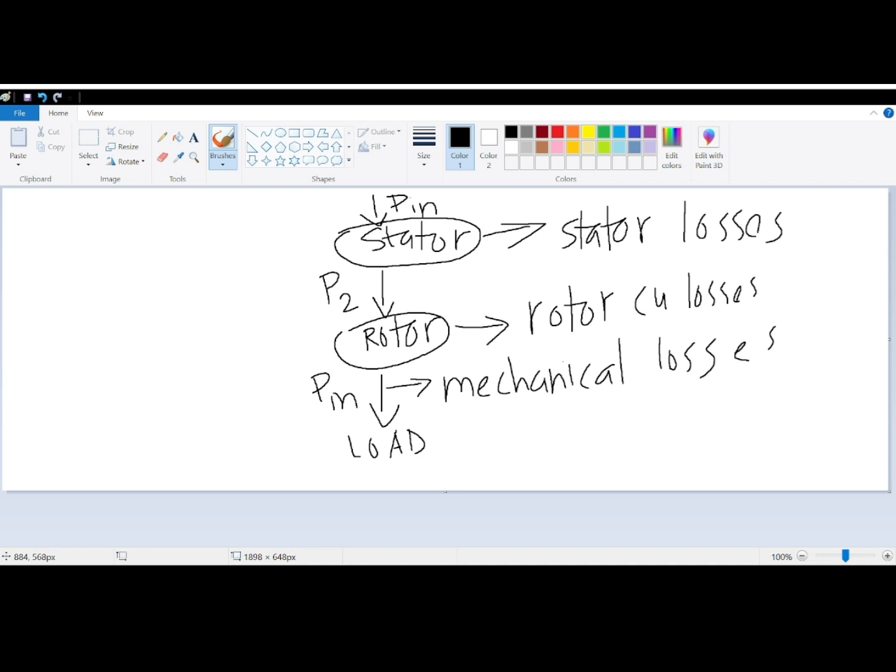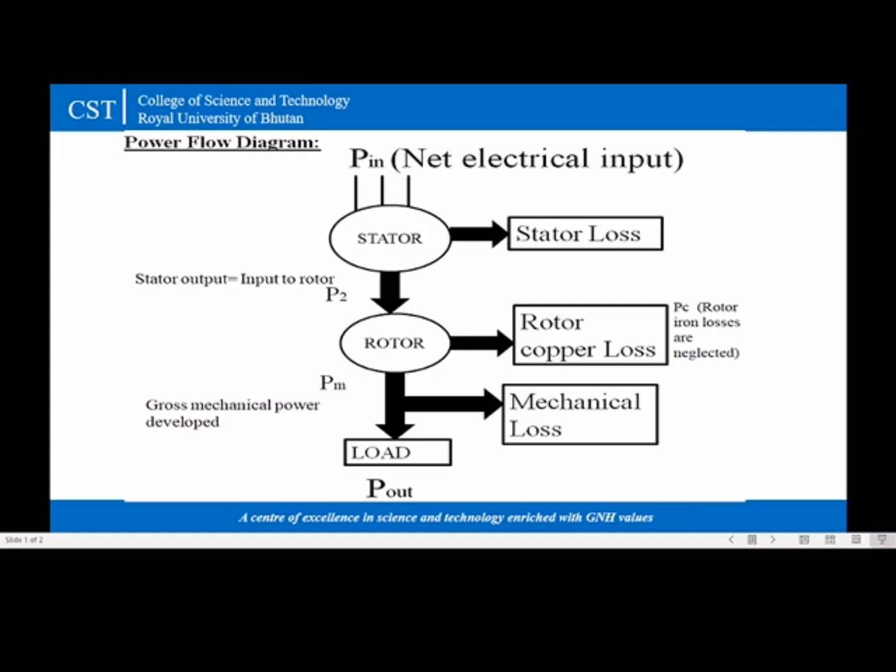Finally the power is available to the load. The net output of the motor denoted as Pout. This is the diagram I was explaining earlier.